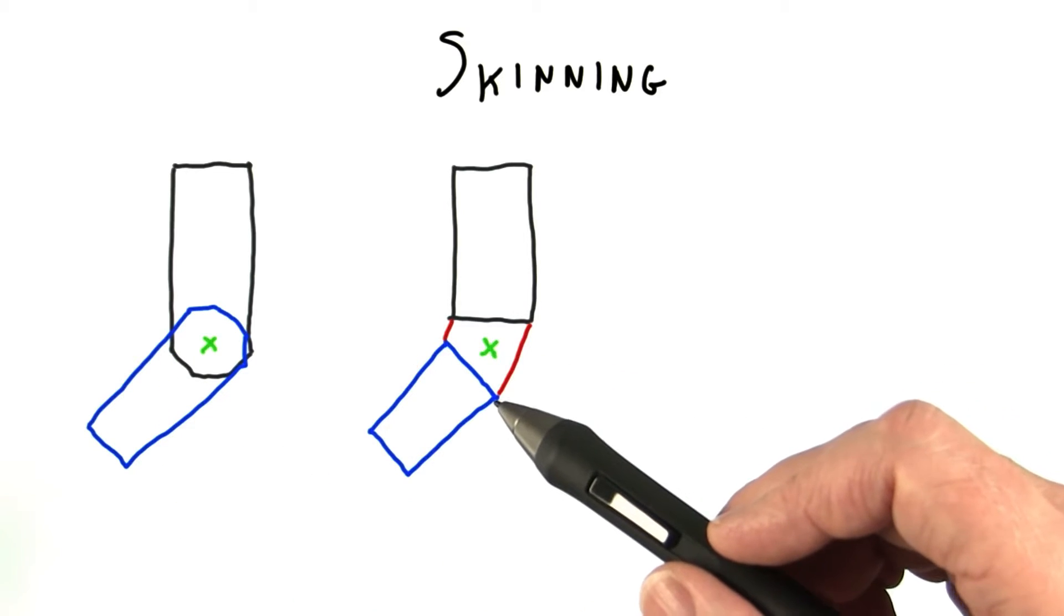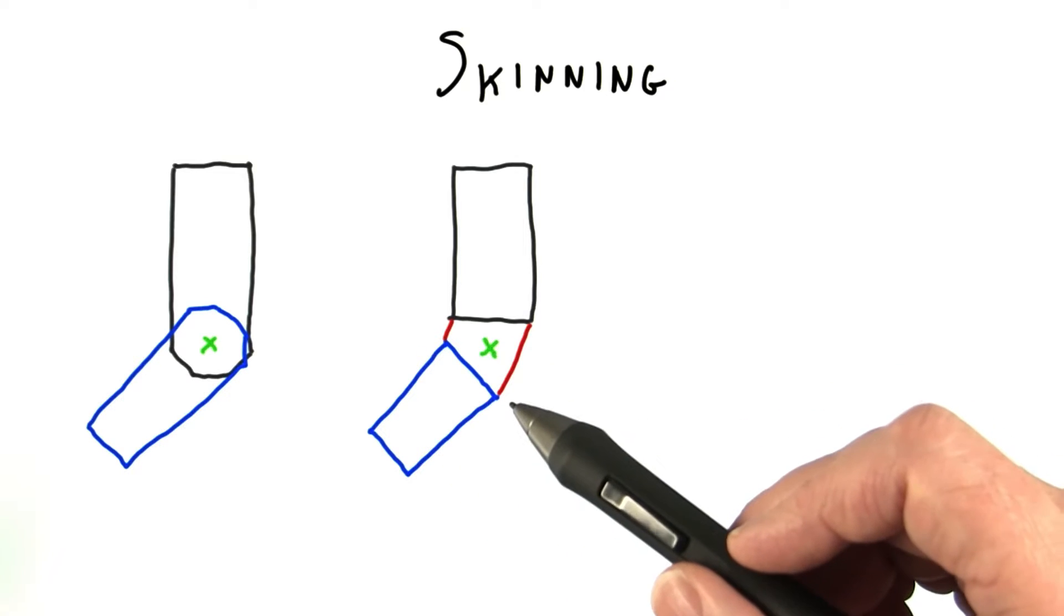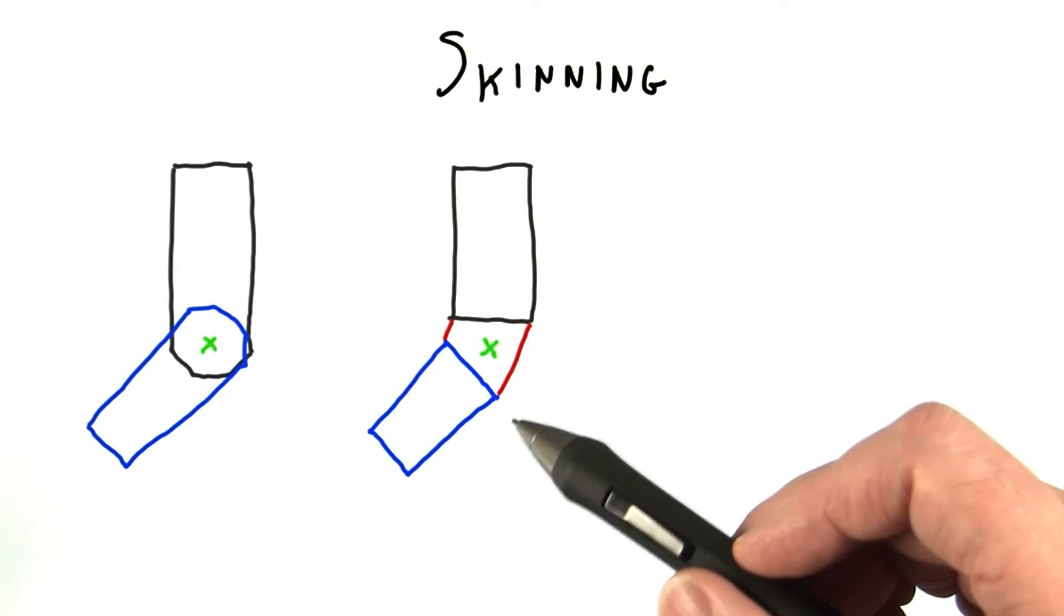One simple solution is to put some triangles connecting the two rigid pieces, sort of like a cylinder. As the joint bends, these triangles deform and stretch, keeping the two arm pieces attached.